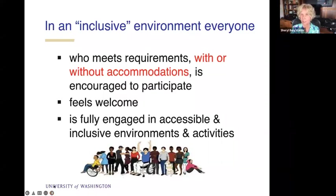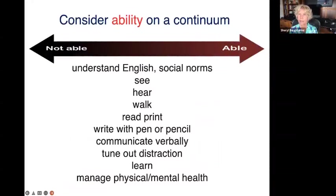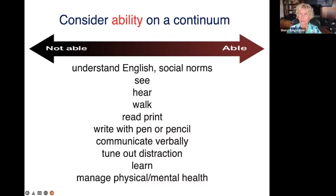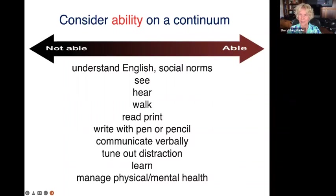Everybody should be fully engaged as much as possible in accessible and inclusive environments and activities. Even if you're just aware of some accessibility issues that might play out with certain students with certain types of disabilities, it's helpful to be a little more aware of how you might reformat something that clearly is not accessible. I think it's helpful to think about abilities rather than disabilities. A disability is a technical definition — legally blind, a learning disability, and so forth.